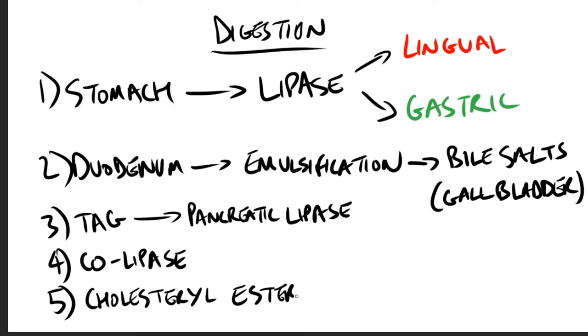Next is cholesterol esters. They are hydrolyzed by pancreatic cholesterol ester hydrolase, but known as cholesterol esterases, which produce cholesterol plus free fatty acids. This activity is increased in the presence of bile salts.